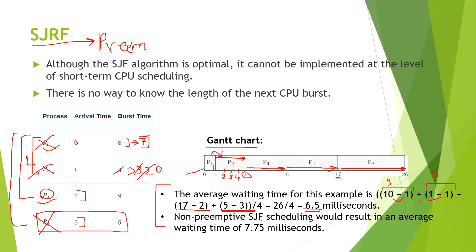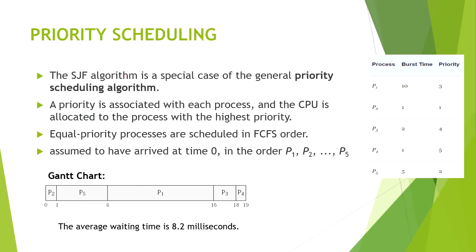Non-preemptive SJRF scheduling would result in an average waiting time of 7.75 milliseconds. So this is the advantage we gain from preemption and SJRF. In the next video we will talk about priority scheduling. Thank you.